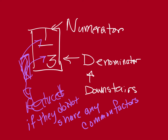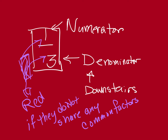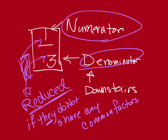Let me rewrite 'reduced' so it's easier for you to read, since I was at a bit of an angle before. So a fraction is reduced if the numerator and the denominator do not share common factors. And factors are the numbers that are multiplied together to get to a number.